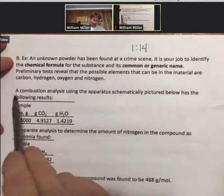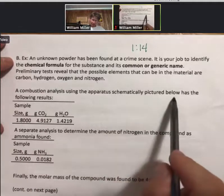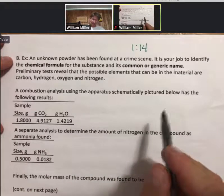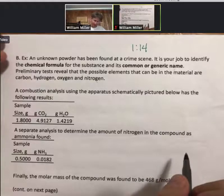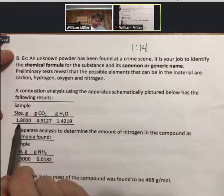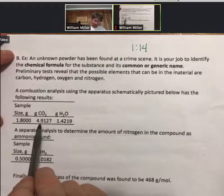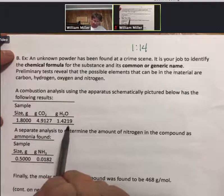And a combustion analysis using the apparatus schematically pictured below, and by below I mean from the previous slide that we did in this lecture, has the following results. Sample size of 1.8 grams produces this many grams of carbon dioxide and this many grams of H₂O.